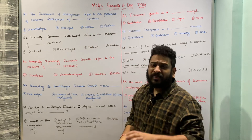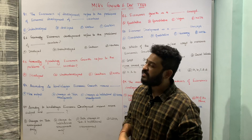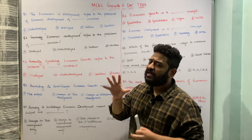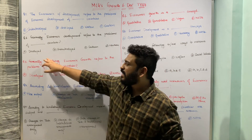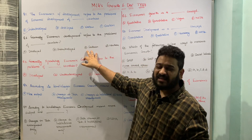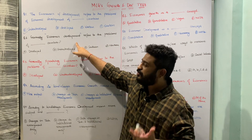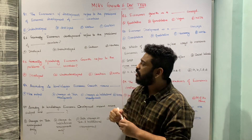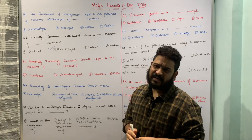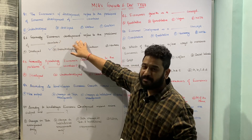The next question: 'Generally, economic development refers to the problems of ___ countries.' The options are: developed countries, underdeveloped countries, southern countries, or northern countries. Generally speaking, economic development particularly refers to the problems of underdeveloped economies, so option B — underdeveloped countries — is the correct answer.